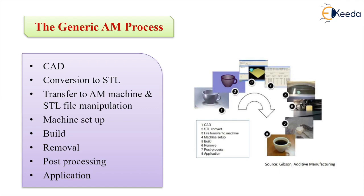We then have the machine setup, where the auxiliary geometry and process parameters are converted into the part geometry. After that, we get the 3D object. There are also certain cleaning and removal processes, followed by post-processing steps for the AM parts, before the part goes on to its required application.